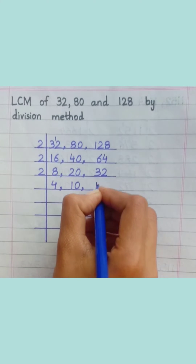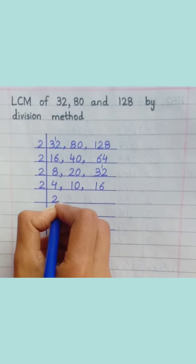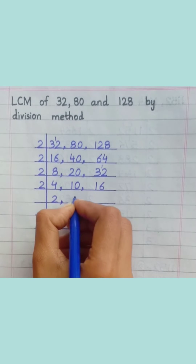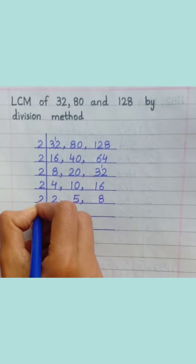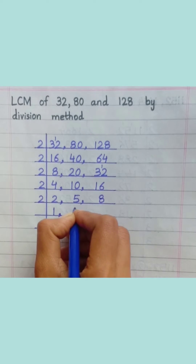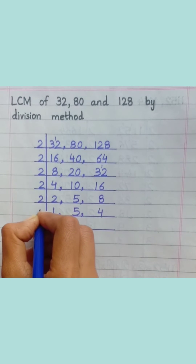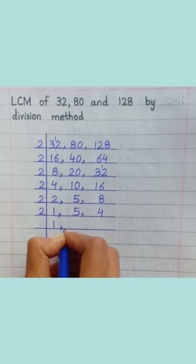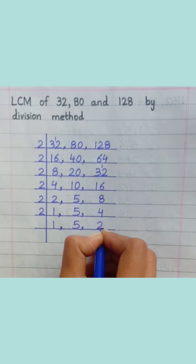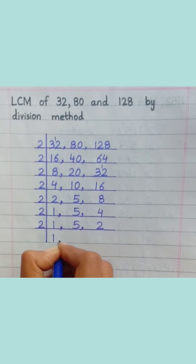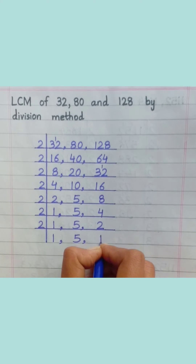2 ones are 2, 2 sixes are 12, 2 twos are 4, 2 fives are 10, 2 eights are 16, 2 ones are 2, 2 fours are 8, 2 twos are 4, 2 twos are 4, 2 ones are 2.